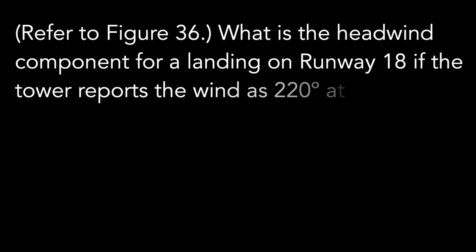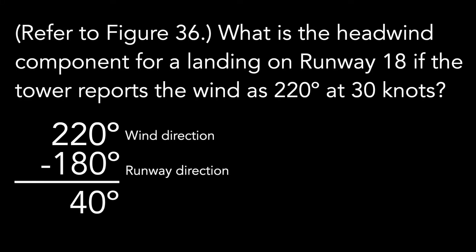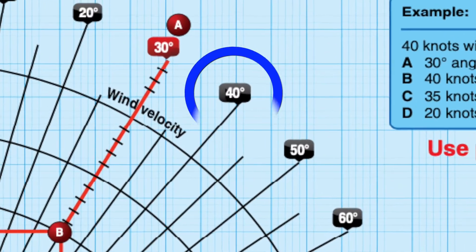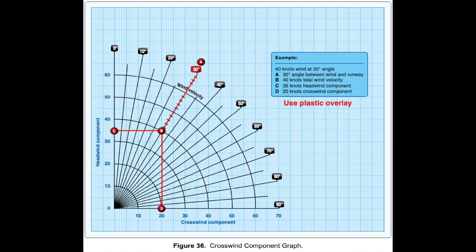Here is a sample question asking for the headwind component when landing on runway 18 if the tower reports the wind as 220 degrees at 30 knots. We subtract 180 from 220 to get the angle difference of 40 degrees. We go to the top area of the chart and pick out the 40 degree line.